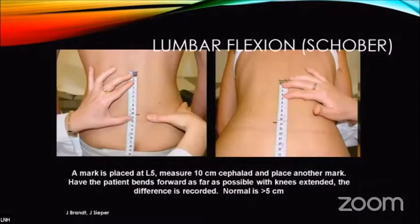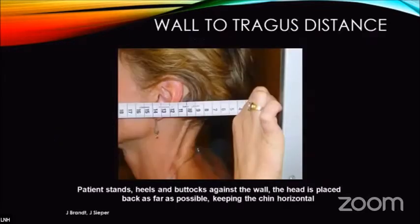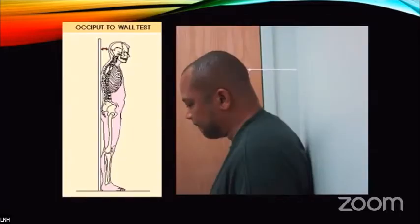A simple clinical test is the Schober test, in which a mark is put on the back and the patient is asked to flex. If the distance increases by more than five centimeters, they have a good spine; if less than five centimeters, the spine is restricted and kyphotic. Another test is the wall-to-tragus distance, where the patient stands against a wall and the distance is measured — normally more than 10 centimeters. If it's increasing, the patient has increased kyphosis. The same principle applies to the occipital wall test: as kyphosis increases, the distance between the wall and the occiput increases.